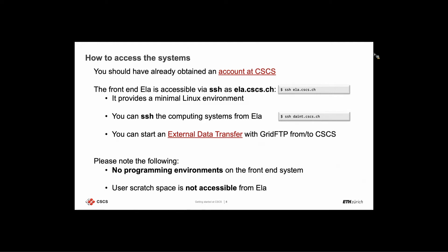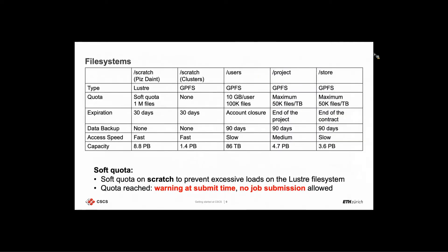Let's now describe the file system resources available at CSCS. In the table shown, you can see each file system's name, type, quota, data expiration, backup status, access speed, and total capacity. In particular, there is a soft quota implemented on scratch on Piz Daint to prevent excessive load on the Lustre file system.